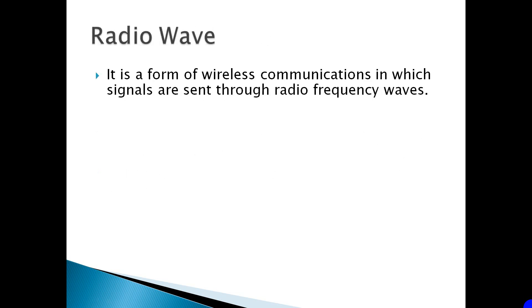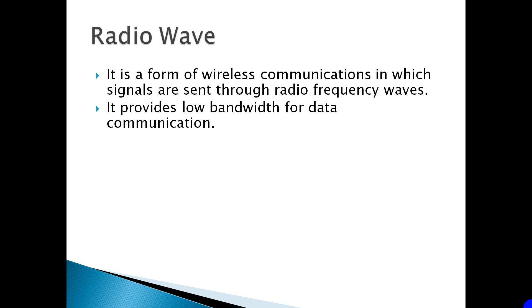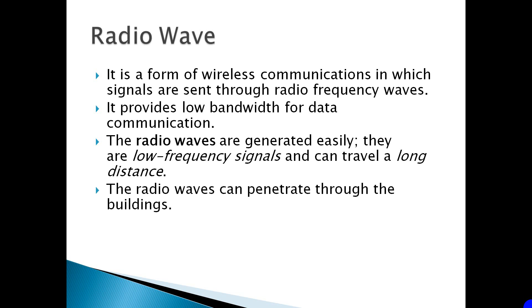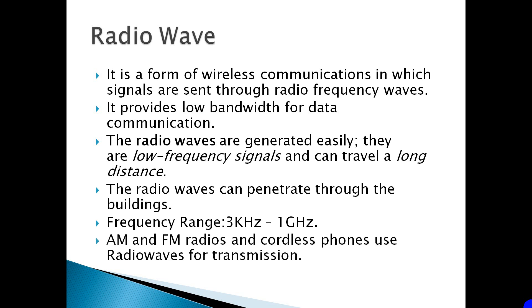Radio Waves. It is a form of wireless communication in which signals are sent through radio frequency waves. It provides low bandwidth for data communication. The radio waves are generated easily, are low frequency signals, and can travel a long distance. The radio waves can penetrate through buildings. The frequency range is 3 kHz to 1 GHz. AM and FM radios and cordless phones use radio waves for transmission.